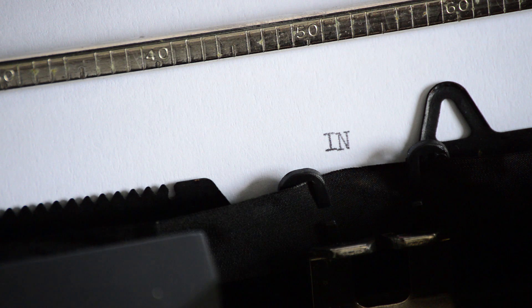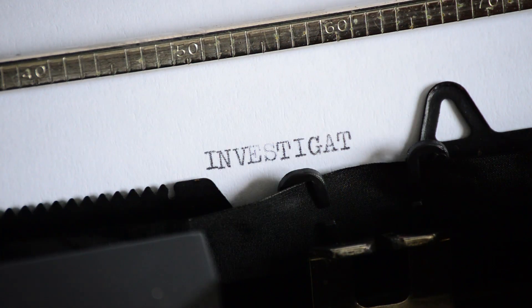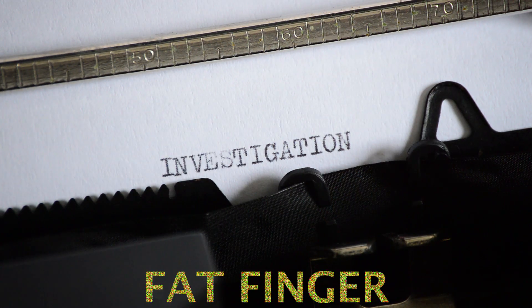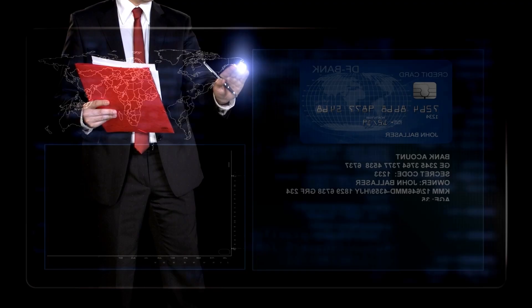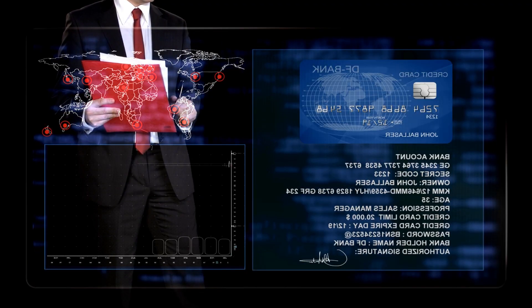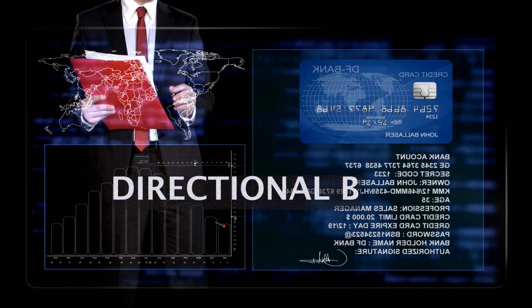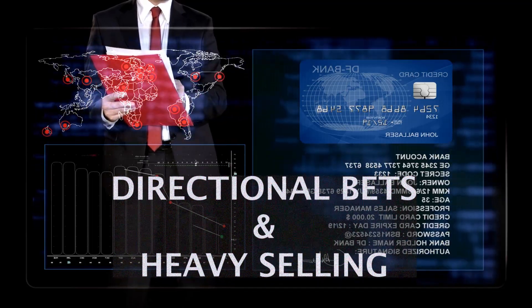Investigation followed, and the initial accusations aimed at Vidal and Reid and fat finger errors. But within five months, the CFTC came out with a report stating that the crash was due to massive directional bets and heavy selling.